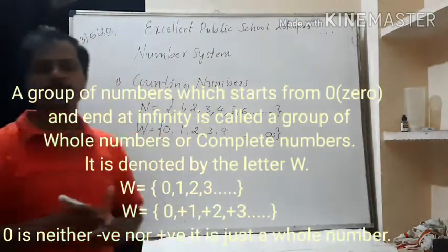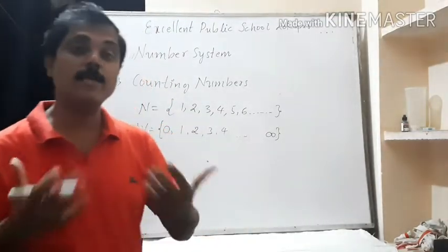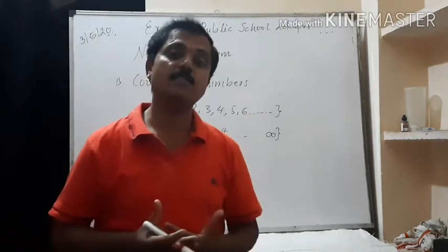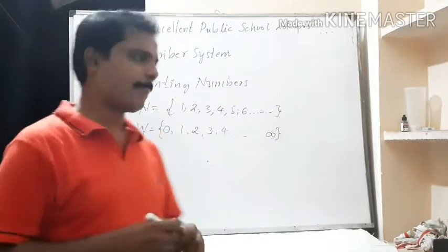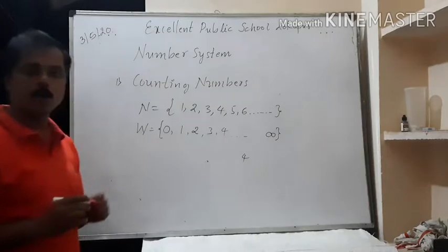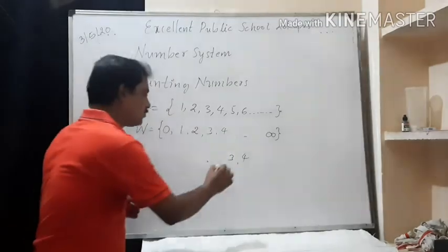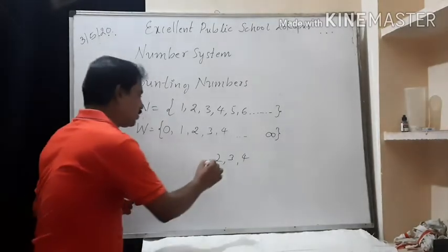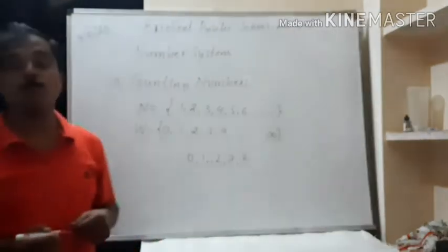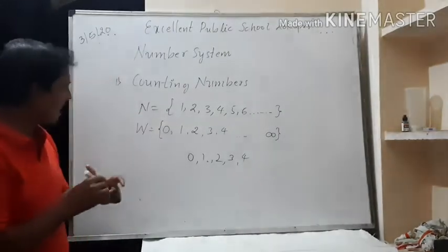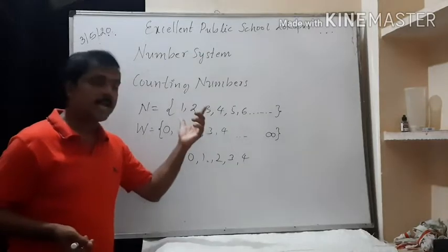Now, are these two sets of numbers enough to meet our day-to-day life needs? No. Again, we need one more group of numbers. Let us see why. I write 4, which is a whole number. The number less than 4 is 3, less than 3 is 2, less than 2 is 1, and the number less than 1 is 0. What about the number less than 0? Can we find a number less than 0 from this group? No.